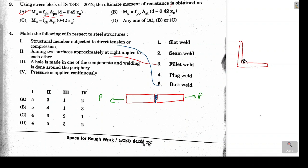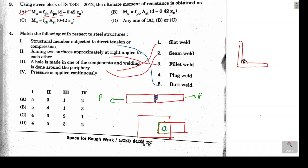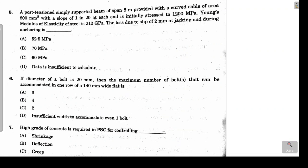When joining two surfaces at right angles, we use fillet weld — the second statement matches with the third option. When a hole is made in one component and welding is done around the periphery to increase weld length, this is slot weld — the third statement matches option one. When pressure is applied continuously, the weld used is seam weld — fourth matches with two. So option A is the correct answer.